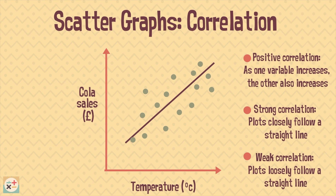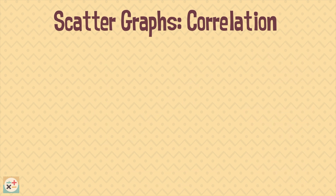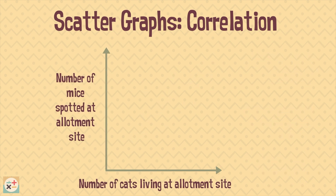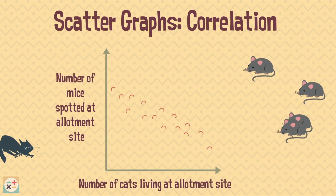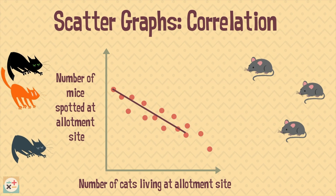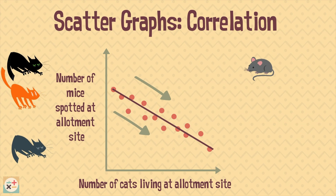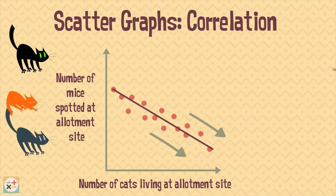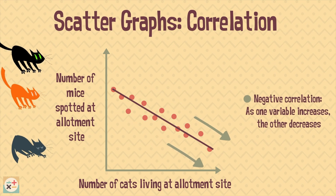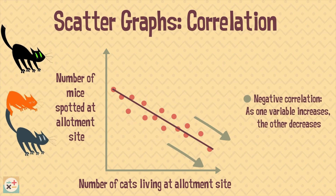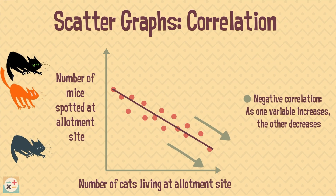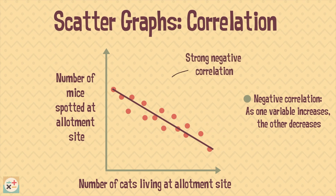Now let's have a look at another example. This scatter graph shows that as the number of cats living at an allotment site increases, the number of mice decreases. This shows a negative correlation — in particular, a strong negative correlation. As one variable increases, the other decreases.